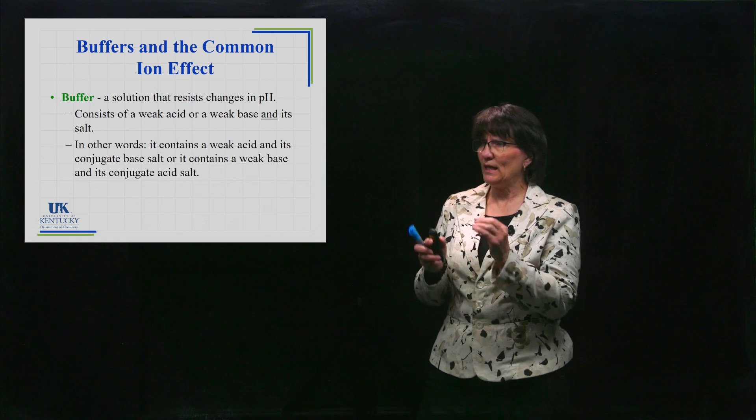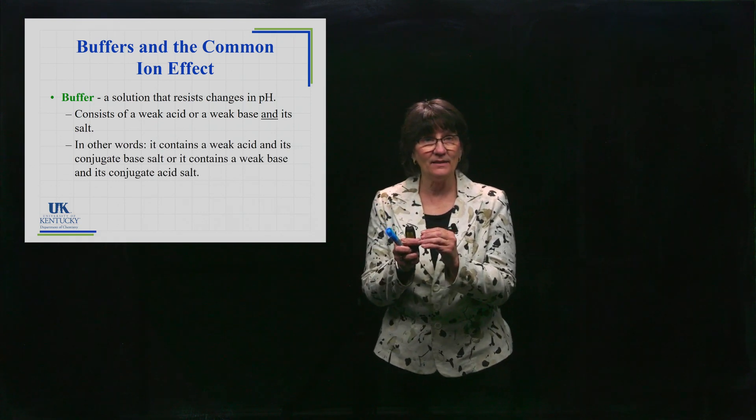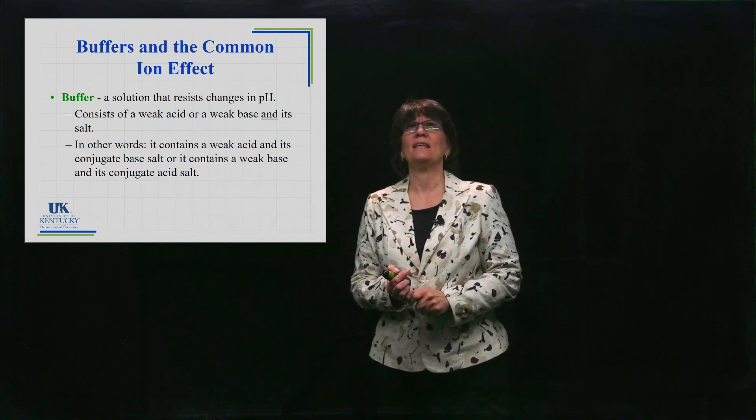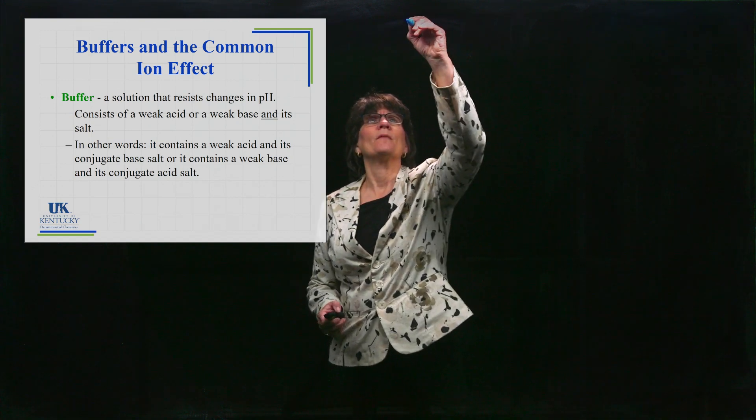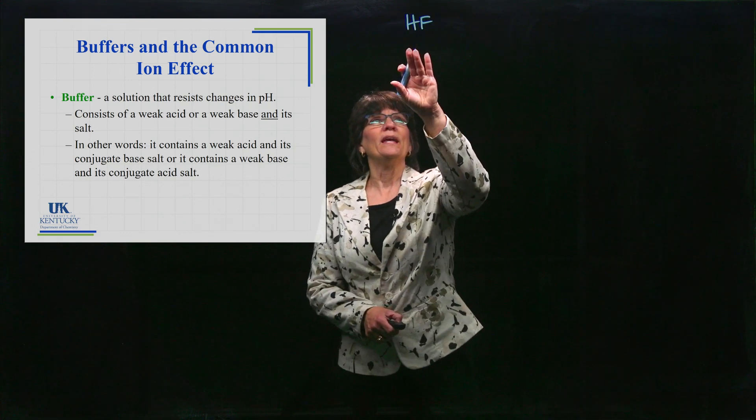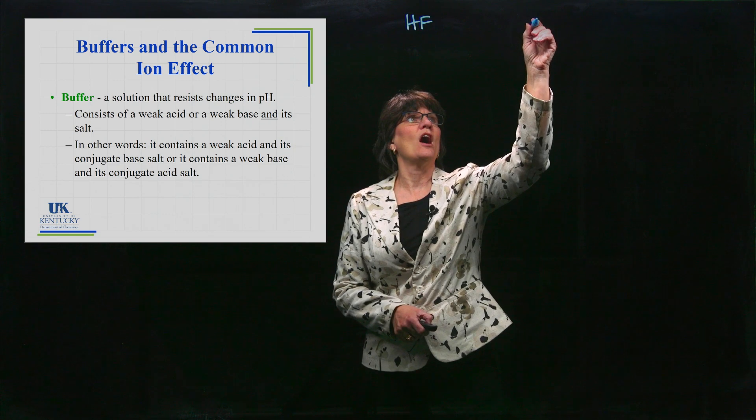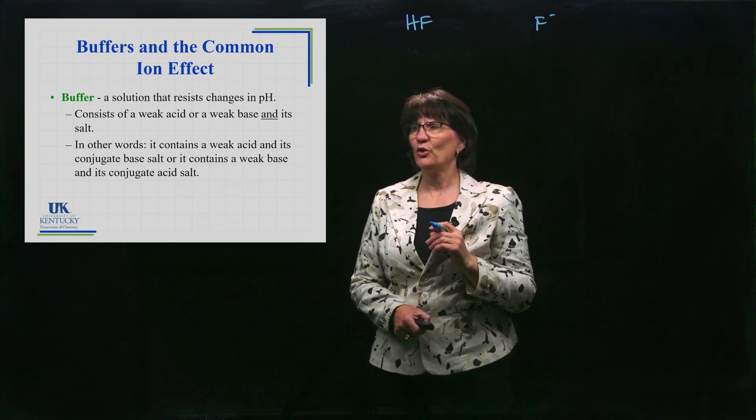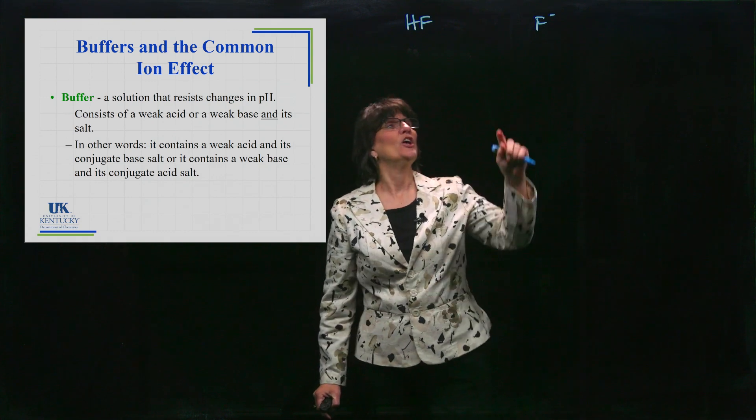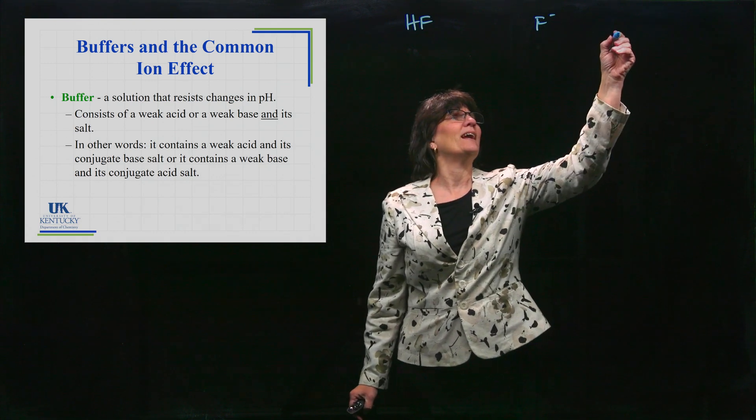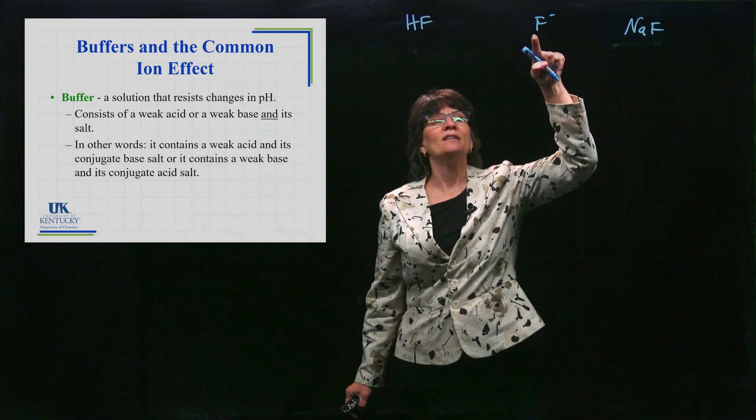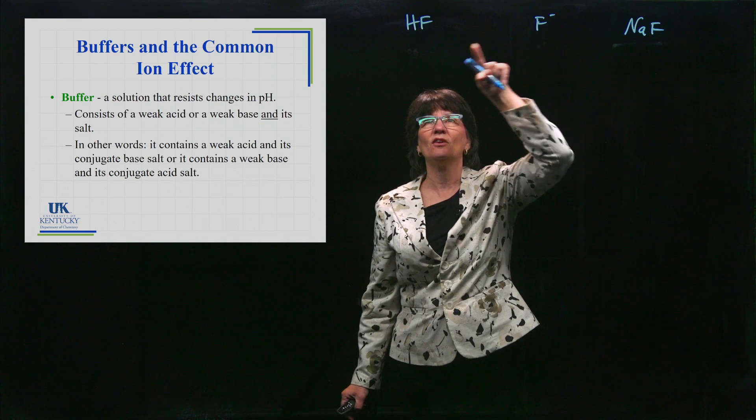Here's another way of looking at it: you could have a weak acid and its conjugate base salt. Let's say it was HF - that's a weak acid. What's its conjugate base? The conjugate base would be F minus. You can't just go to a shelf and pull some F minus off the shelf and mix it together with the HF. This is an ion, so you need an ionic compound containing that - that's the salt containing the conjugate base of that weak acid.